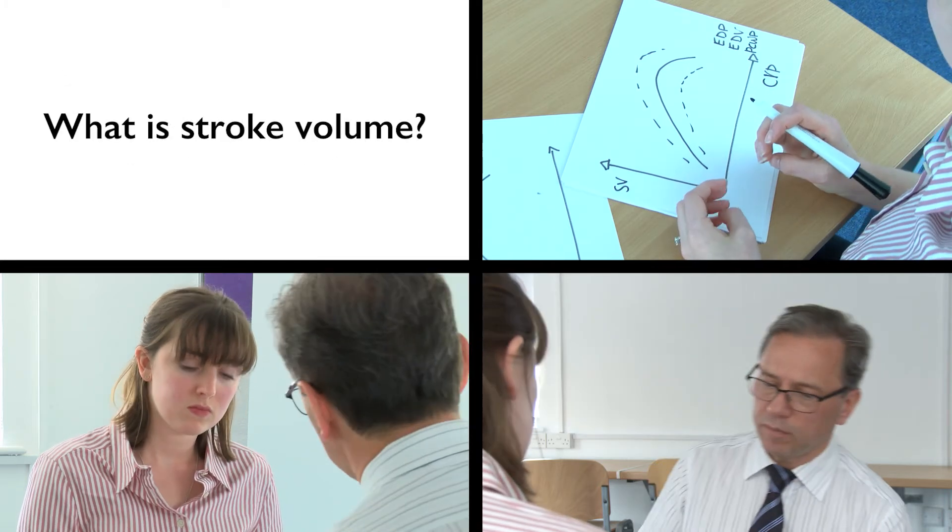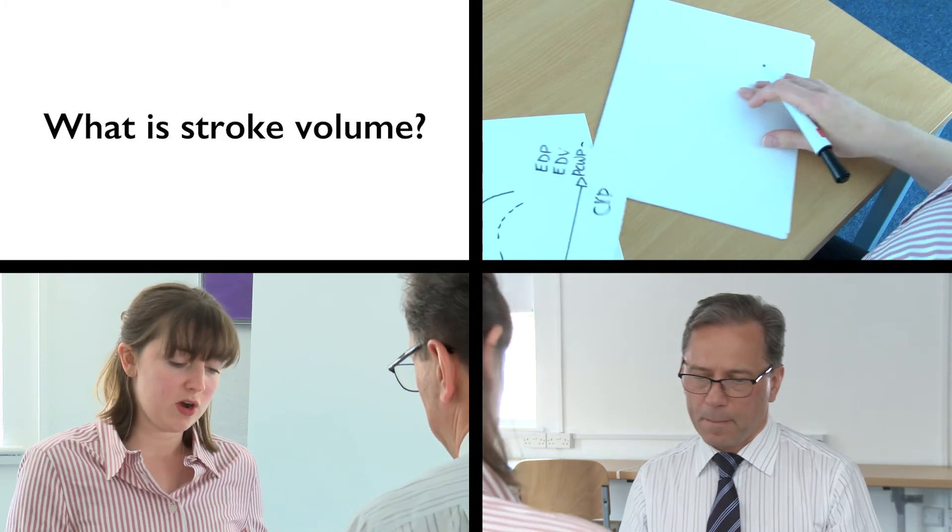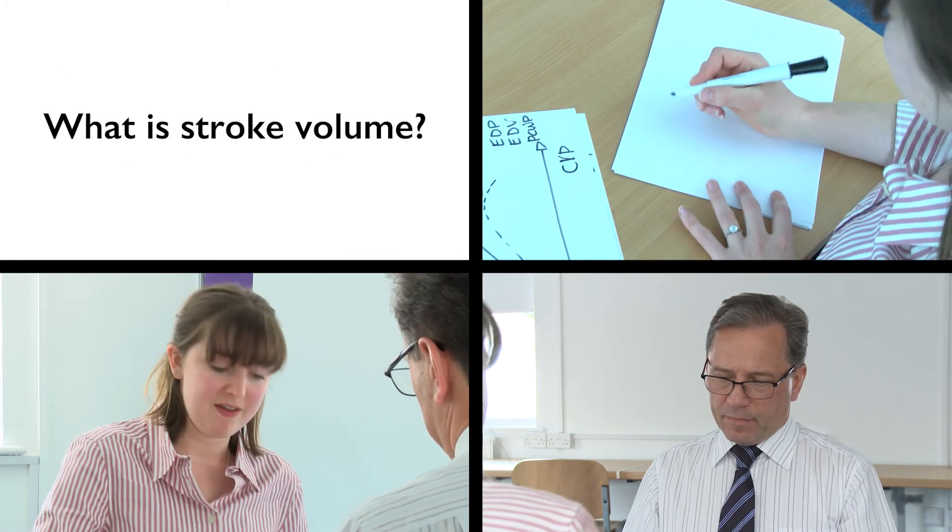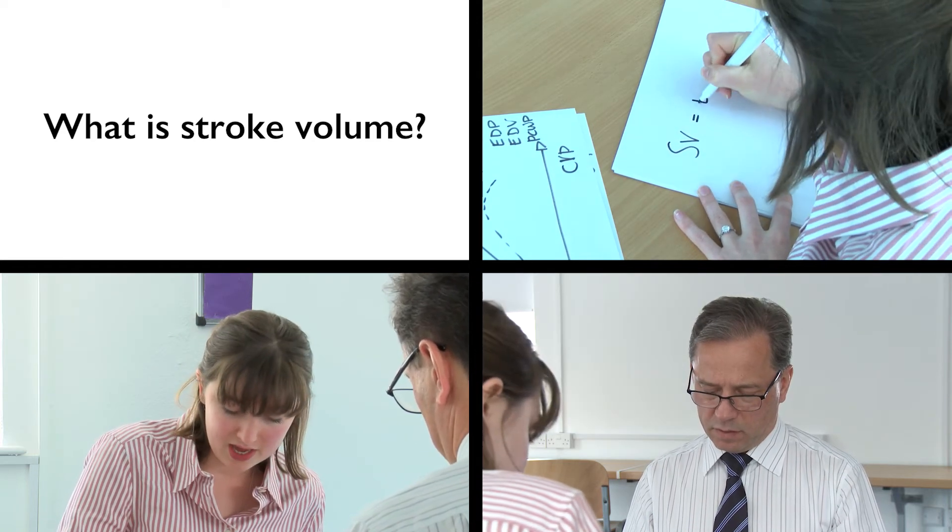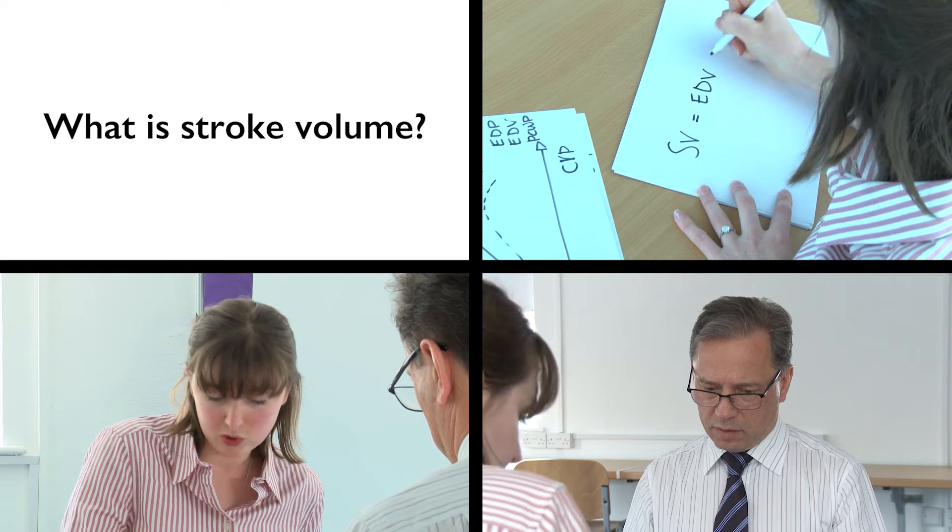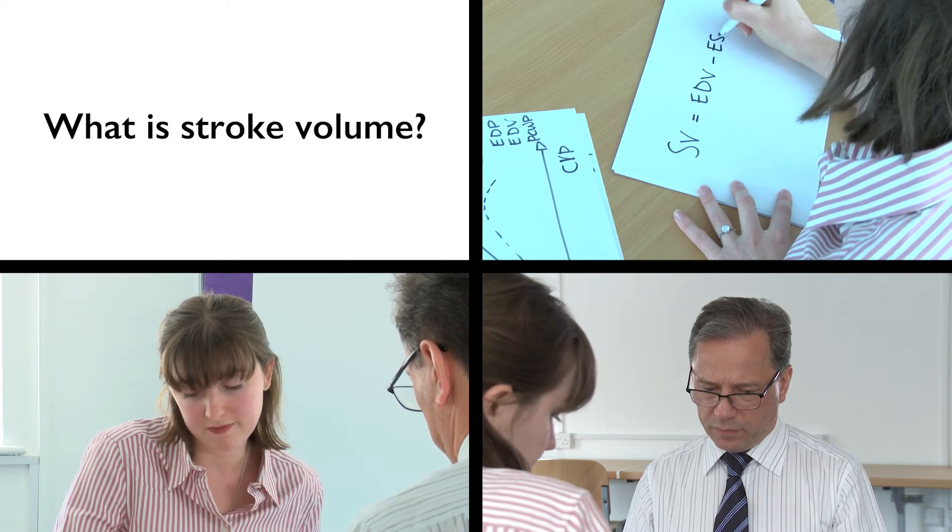What do you understand by stroke volume? Stroke volume describes the volume of blood ejected from the left ventricle in one contraction. And it's represented by the end diastolic volume minus the end systolic volume.